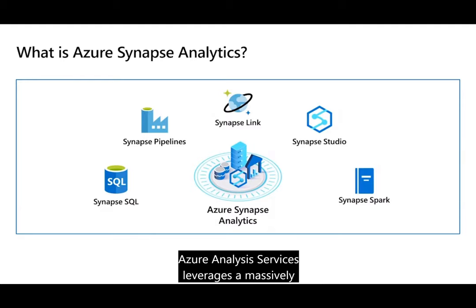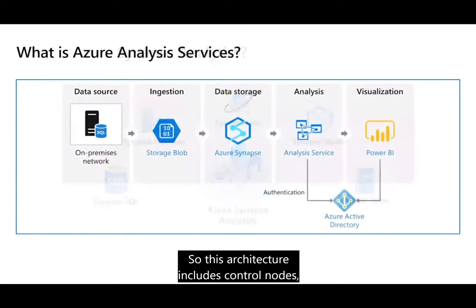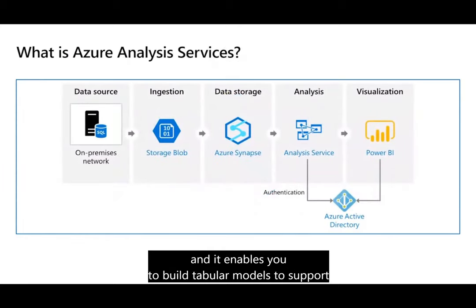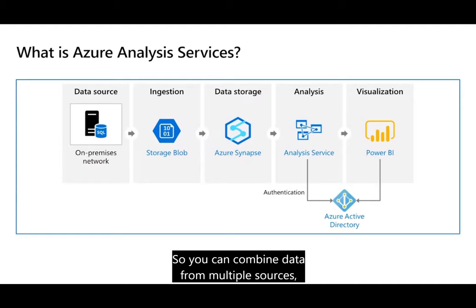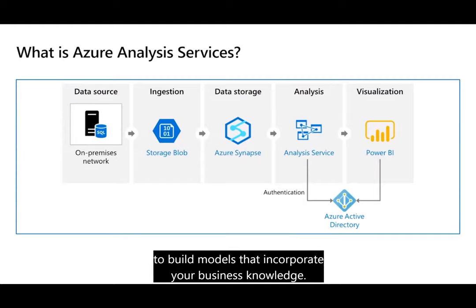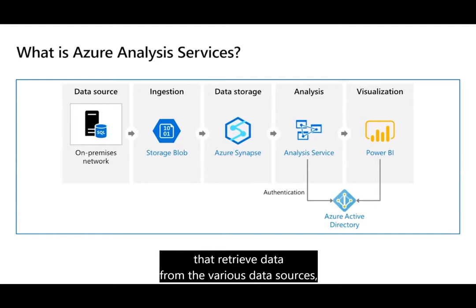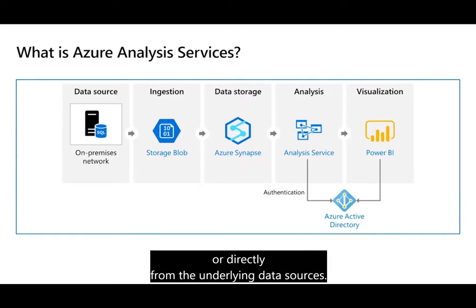Azure Analysis Services leverages a massively parallel processing architecture that includes control nodes, enabling you to build tabular models to support your online analytical processing queries. You can combine data from multiple sources like Azure SQL Database, Azure Synapse Analytics, Azure Data Lake Storage, Azure Cosmos DB, and many others, then use these data sources to build models that incorporate your business knowledge. A model is essentially a set of queries and expressions that retrieve data from various data sources and can be used to generate results — those results can be cached in memory for later use or calculated dynamically from the underlying data sources.